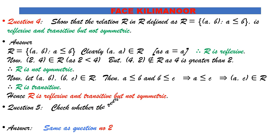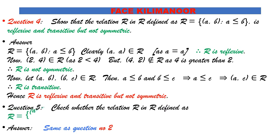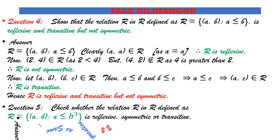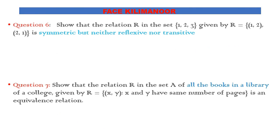Question 5: Check whether the relation R in the real numbers defined as R = {(a,b) : a ≤ b³} is reflexive, symmetric, and transitive. This is similar to question 2 where a ≤ b². Here a ≤ b³. The answer follows similarly.